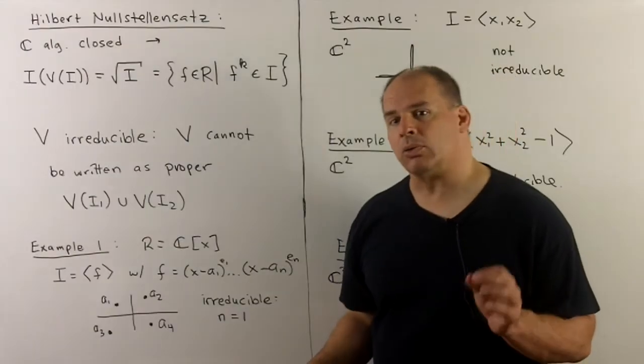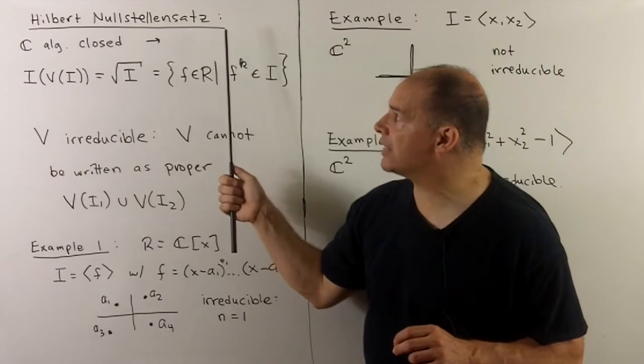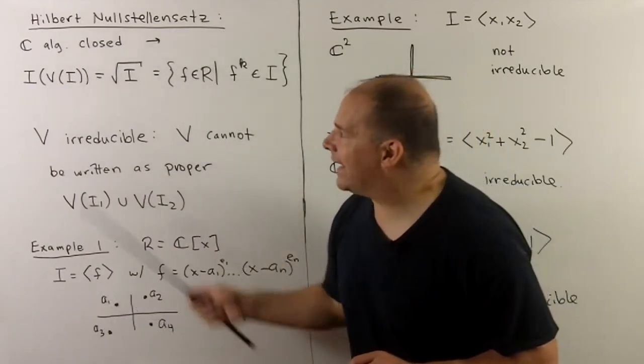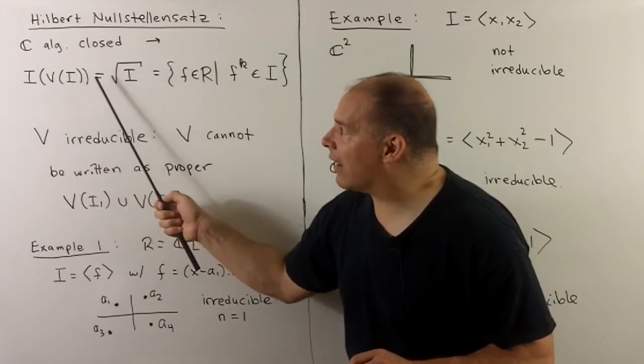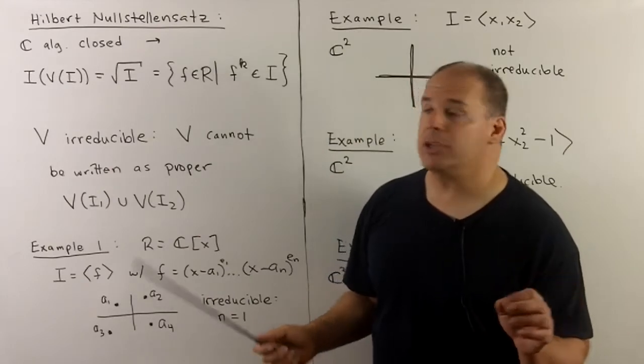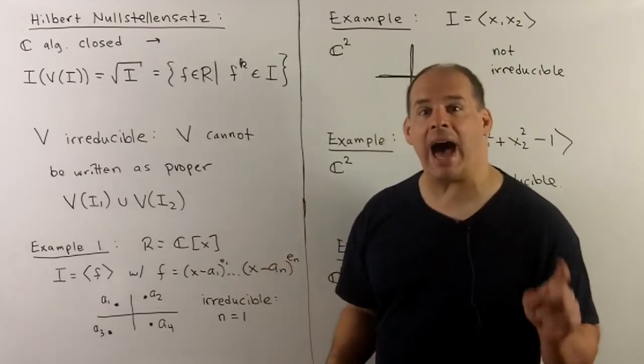Now, the relationship between I and V is summarized by the Hilbert Nullstellensatz. Since C is algebraically closed, we take any ideal I, take the variety for I, take the ideal for the variety, what we'll get is the radical of I. So essentially all we're doing is drawing down powers of elements in I.